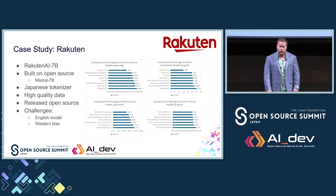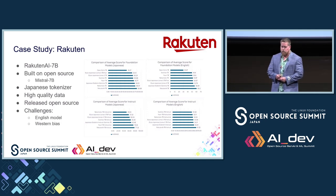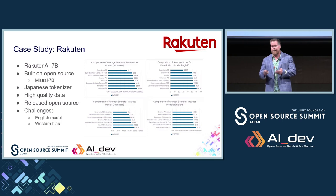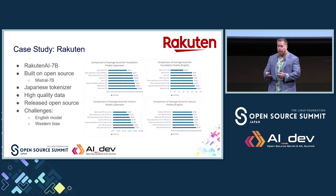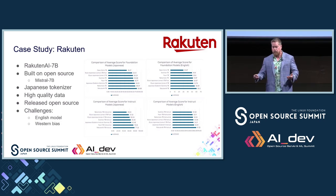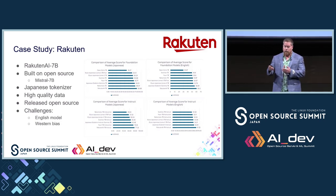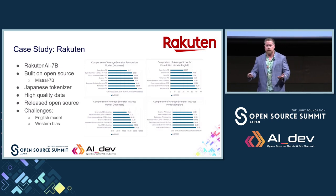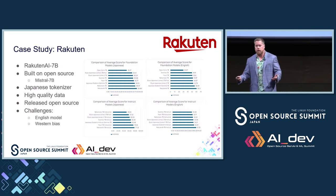I wanted to share a case study that is a really clear example of how open source AI models are valuable to the industry. Rakuten took Mistral 7B, which is permissively licensed under Apache 2.0 as an open source model.